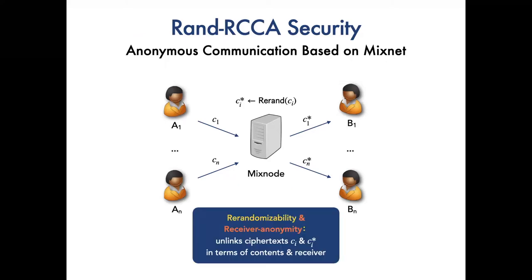So if the PKE is not receiver anonymous, that is, the adversary can obtain some information about the underlying public key from the ciphertext, then the adversary may still be able to correlate the ciphertexts for the same receiver. Therefore, randomizability and receiver anonymity are both required for the MixNet-based anonymous communication.